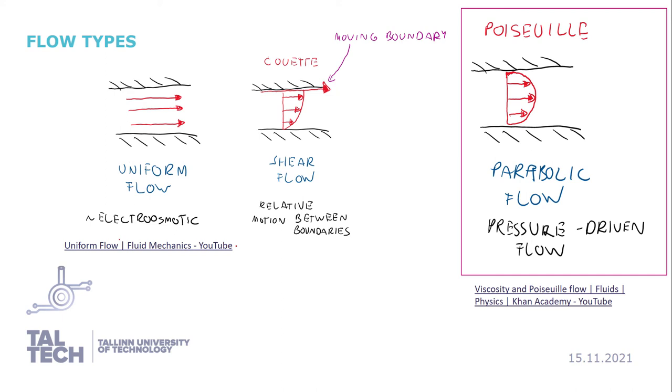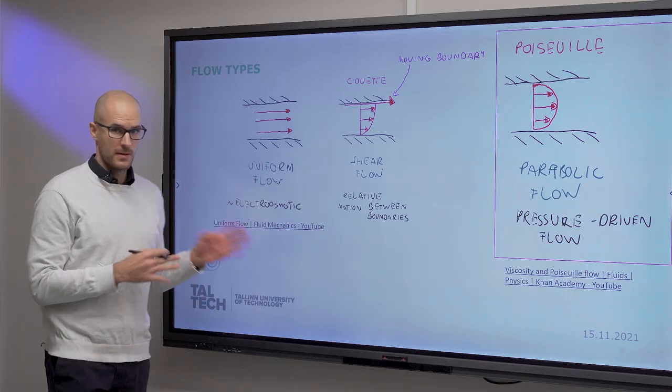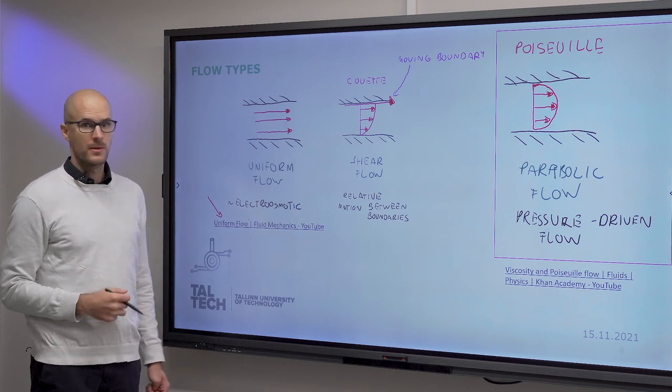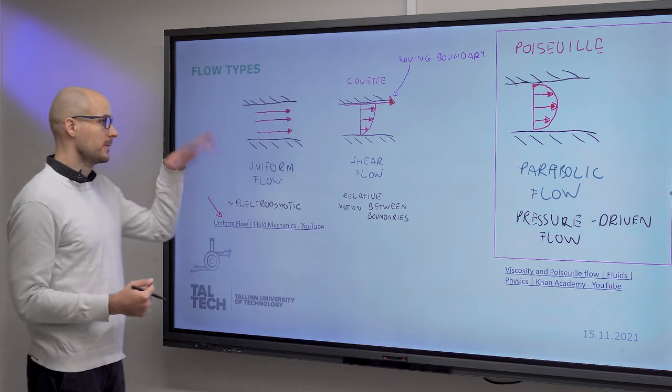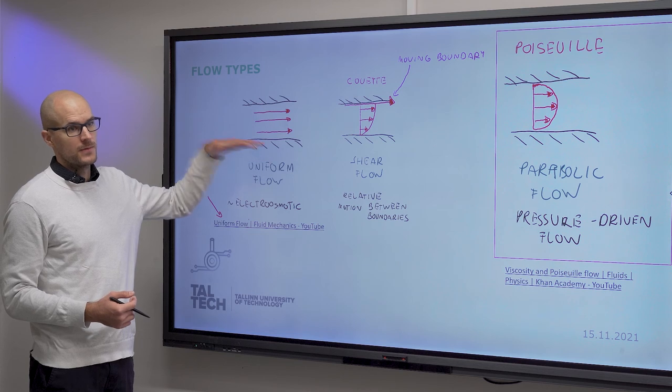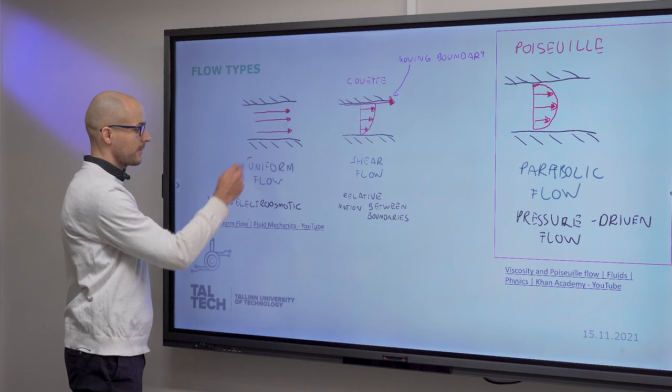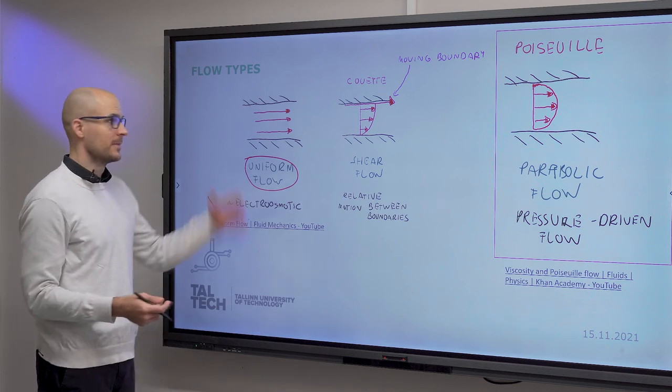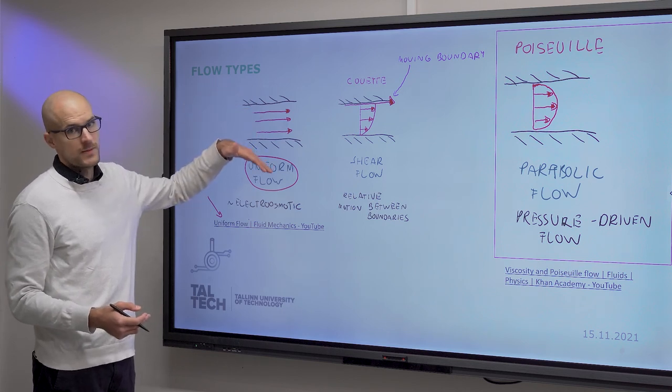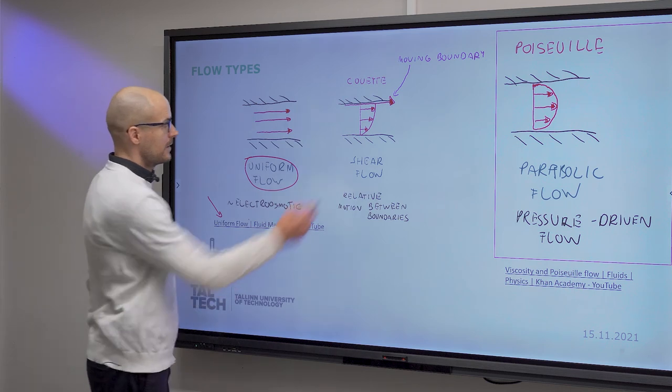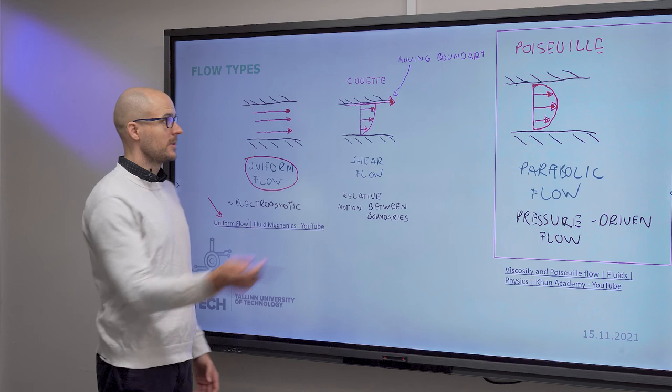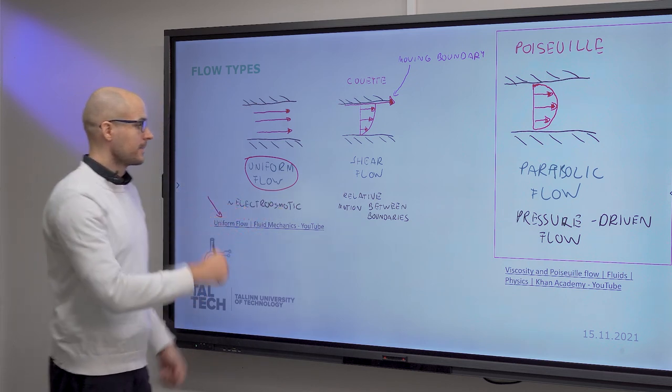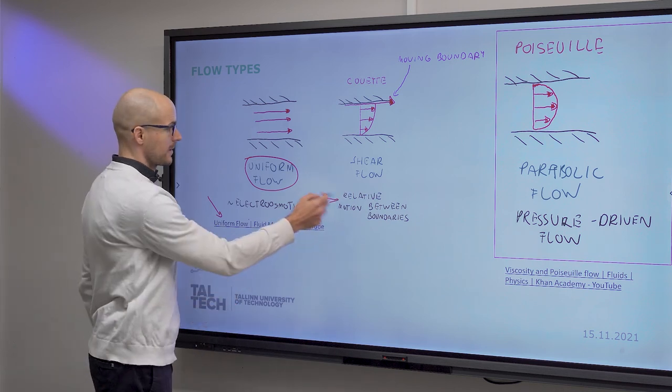The different flow types that we can have in microfluidic systems. Most characteristic is on the right. Uniform flow means that everywhere inside your stream you have the same flow rate or flow velocity. This is a uniform flow, and it appears in, for instance, electro-osmotic flows. If you imagine a fluid being driven between two electrode plates, then that will have uniform flow. Shear flow, or in other words, Couette flow, appears when you have a moving boundary on one side. This is when there's relative motion between the boundaries.